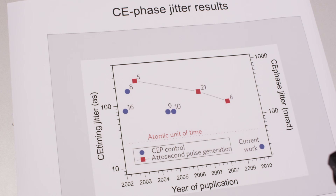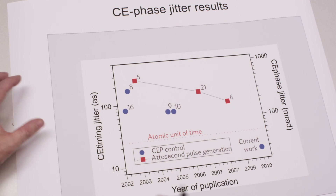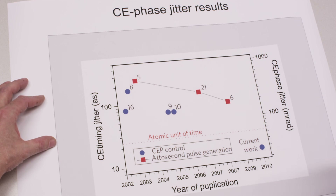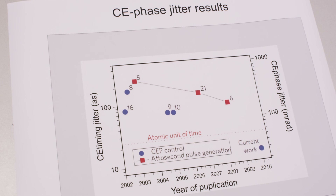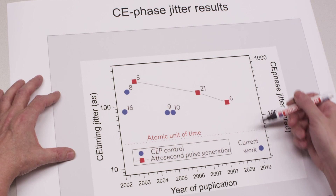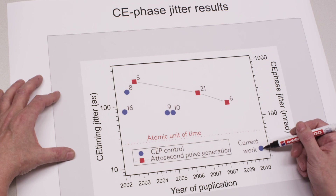Indeed, it does. This figure shows the CE phase jitter results published between 2002 and 2011. On the right axis is the phase jitter in milli-radians; on the left axis is the corresponding CE timing jitter in attoseconds. The blue dots represent results from laser oscillator carrier envelope phase stabilization techniques. The standard method is shown here, and the CEP4 technique gives eight times better results, corresponding to an extremely high temporal resolution of 10 attoseconds. This concludes the tutorial — goodbye.